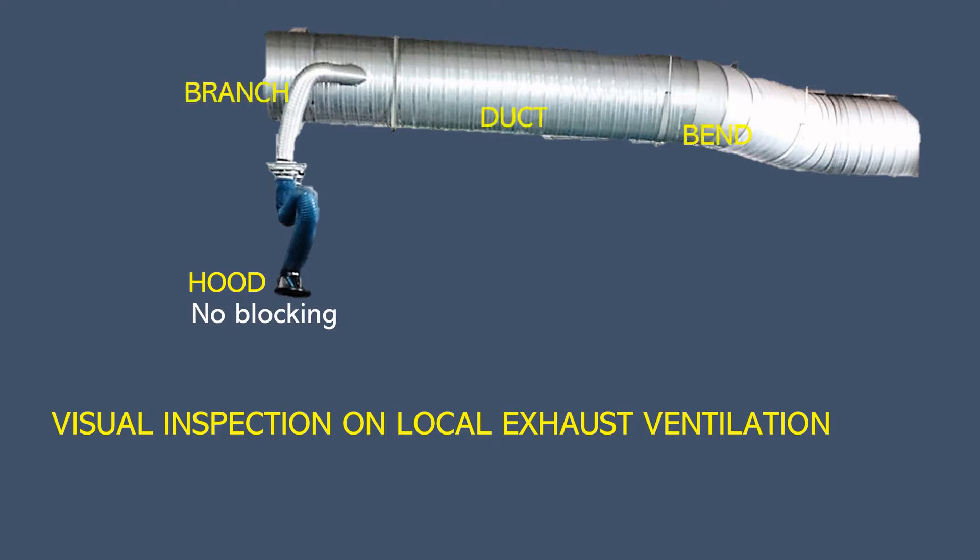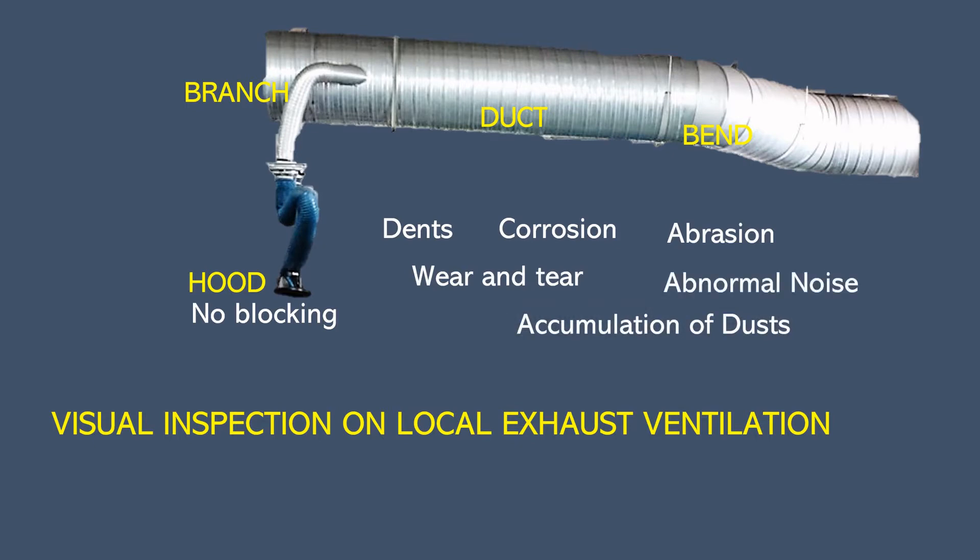Then at the branch, ducts, and at the bends, we need to check whether there are any dents, corrosion, abrasions, wear and tear, accumulation of dust that may interrupt the system, and also any abnormal noise that may indicate loose joints between the bands or maybe irregular operation of the fan. This inspection must be performed at least every 12 months for a welding workshop under normal usage. Any damage identified must be reported in written in the inspection report.